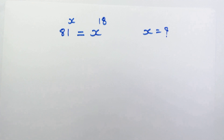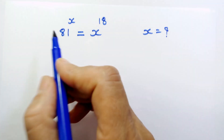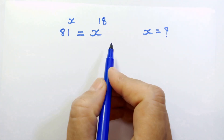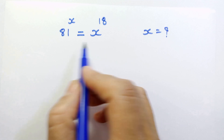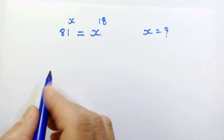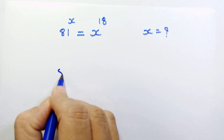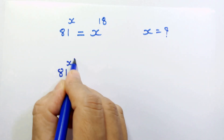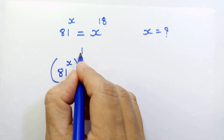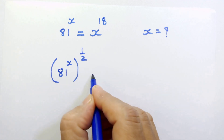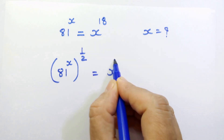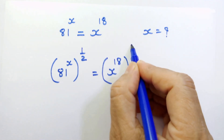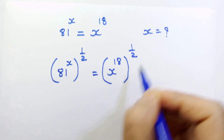Hello friends! Let's raise 1 upon 2 as an exponent on both sides. So we have 81 raised to x, whole raised to 1 upon 2, is equal to x raised to 18, whole raised to 1 upon 2.